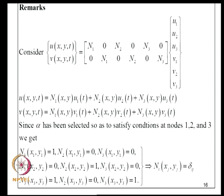Examining this equation, U can be written as N1(X,Y)*U1(T) + N2(X,Y)*U2(T) + etc. Since the alphas were chosen to satisfy conditions at nodes 1, 2, and 3, we get that N1 at (X1,Y1) is 1 and N2, N3 at (X1,Y1) are zero. In general, N_I(X_J, Y_J) = delta_IJ where delta_IJ is the Kronecker delta.